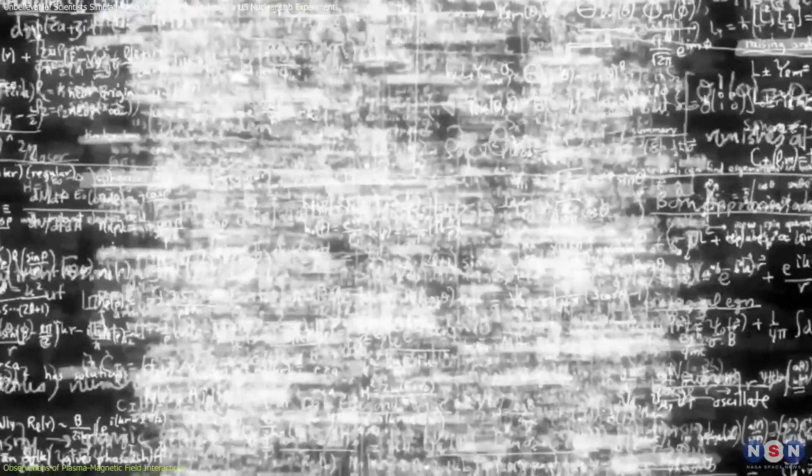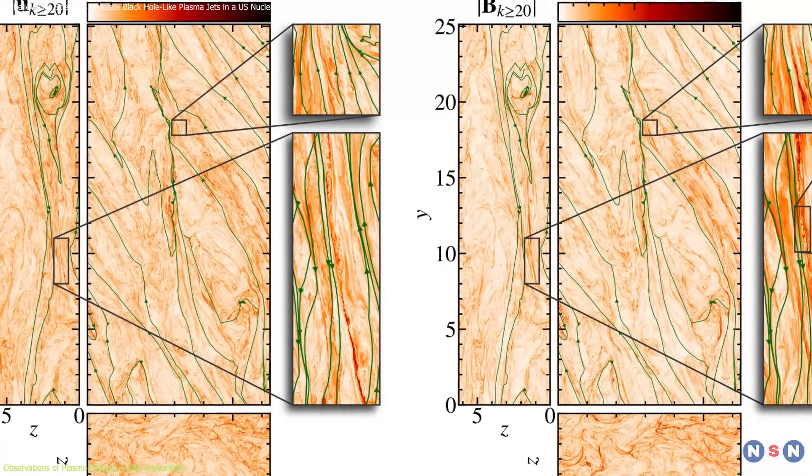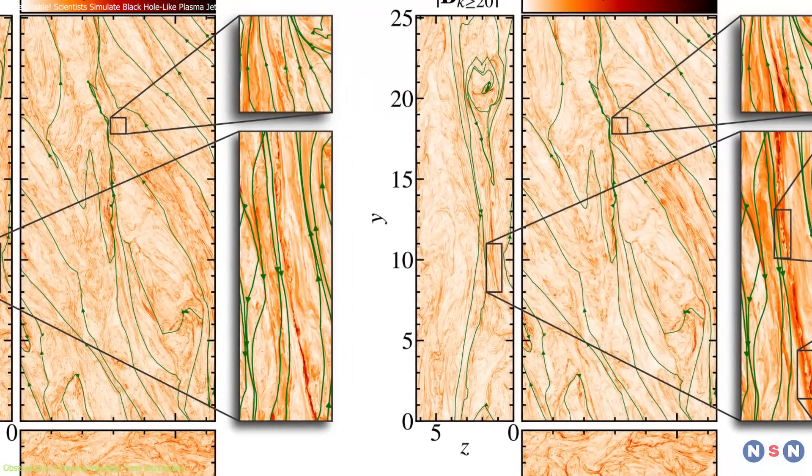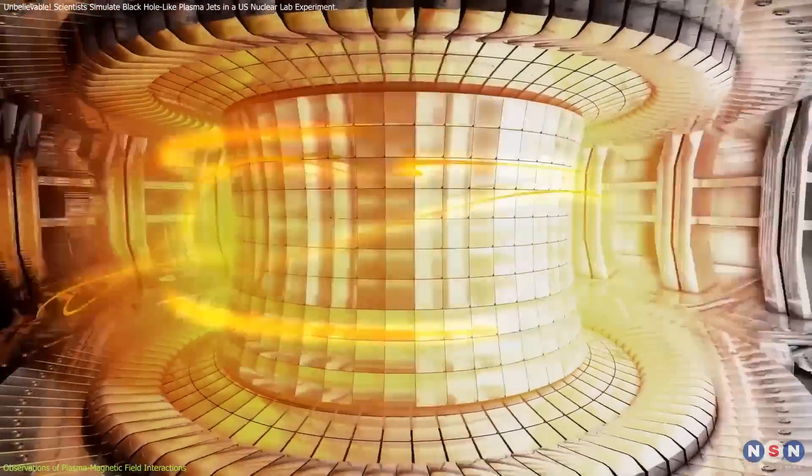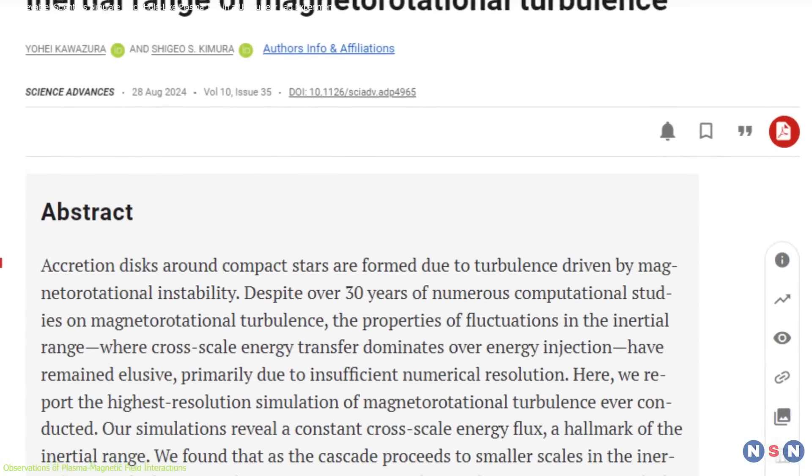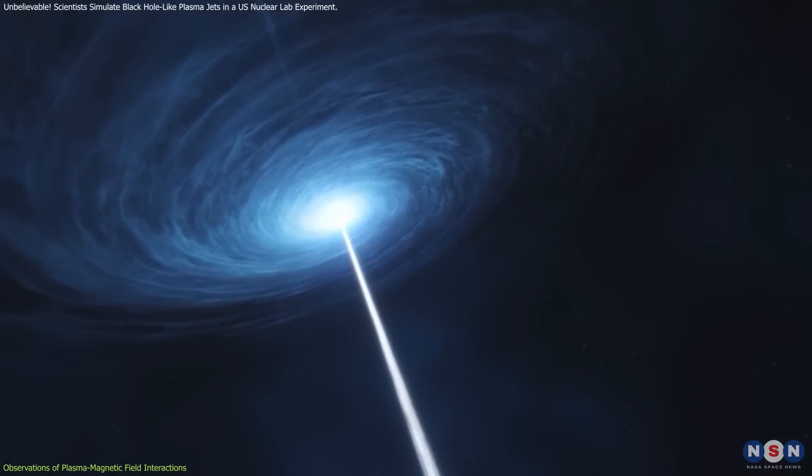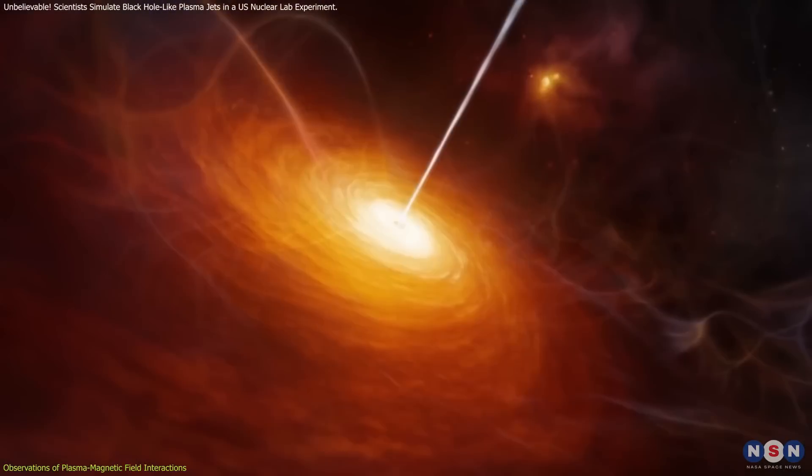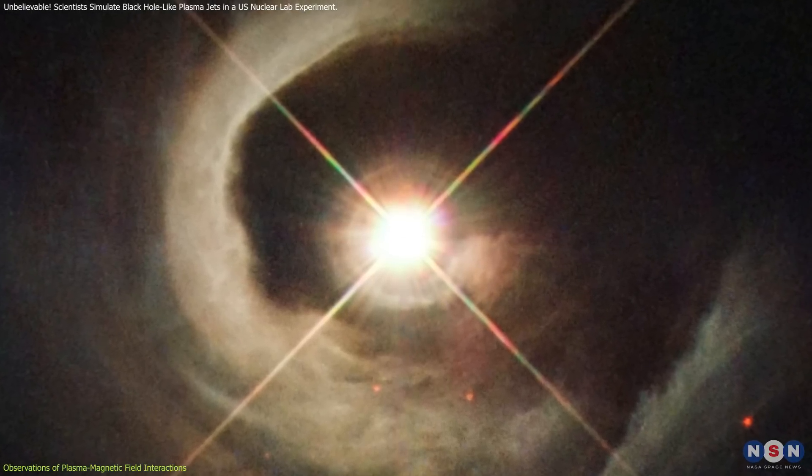This experimental confirmation of long-speculated theories marks a significant breakthrough. The ability to observe these Magneto-Rayleigh-Taylor instabilities in a controlled environment provides new insights into plasma dynamics in extreme conditions. The findings open new avenues for studying astrophysical jets, which occur around black holes, neutron stars, quasars, and young stellar objects (YSOs).